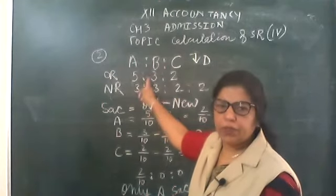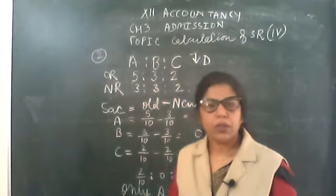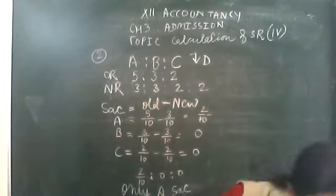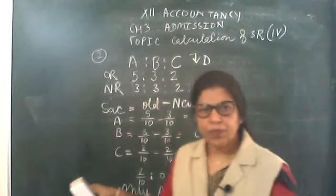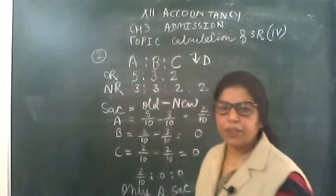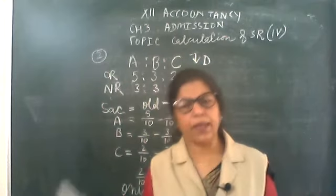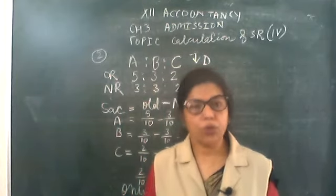A, B, C are partners for 5:3:2 and they admitted D. The new ratio will become 3:3:2:2. I selected a variety of questions for you. Earlier the sacrifice was made by all the partners; in this question, sacrifice was made by only one partner. Now I am giving you an entirely different case where 2 new partners are coming.